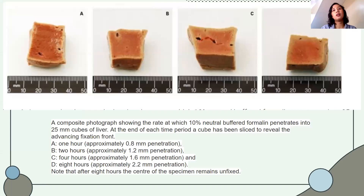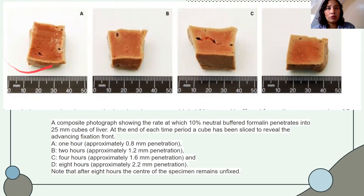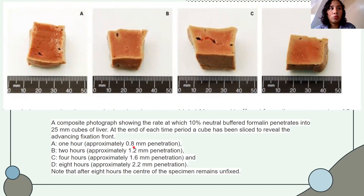Based on a penetration experiment with a 25 mm liver cube, after 1 hour only 0.8 mm was penetrated; after 2 hours, 1.2 mm; after 4 hours, 1.6 mm; after 8 hours, 2.2 mm. Note that after 8 hours the center of a 25 mm specimen remains unfixed. For tissue placed in cassettes, slices should be no more than 2 mm so formalin penetrates faster.